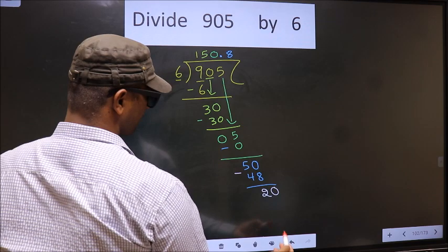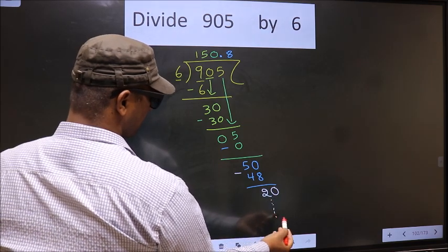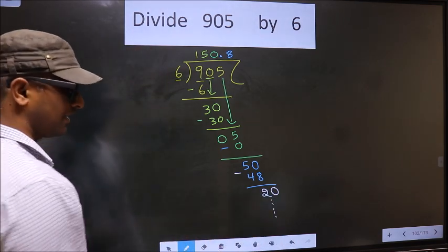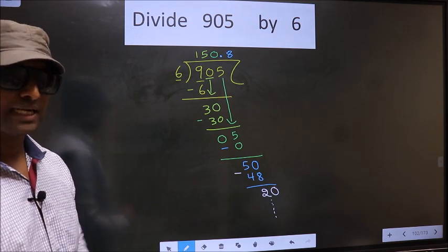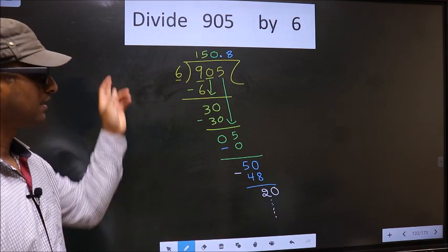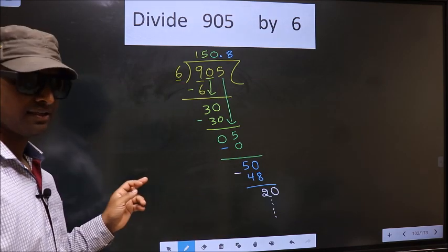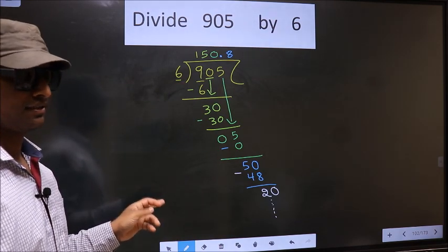And continue the division—I am not doing that. Did you understand where the mistake happens? You should not do that mistake. Am I clear?